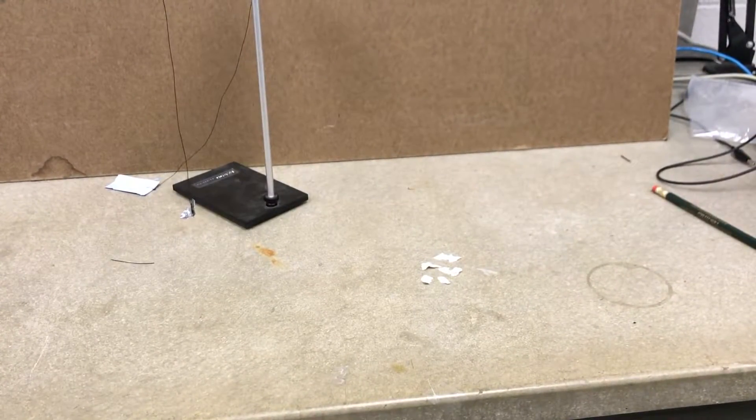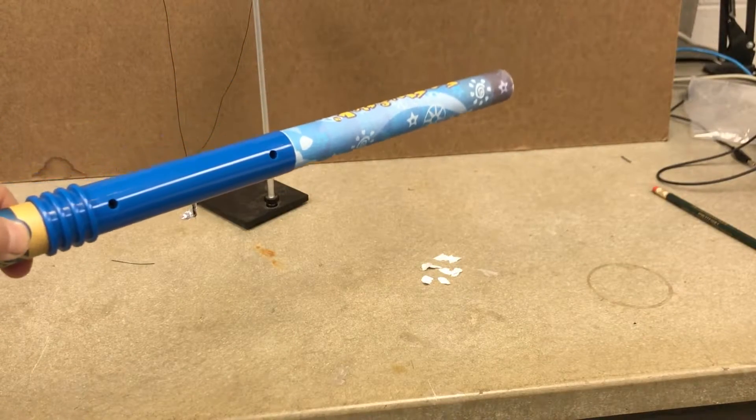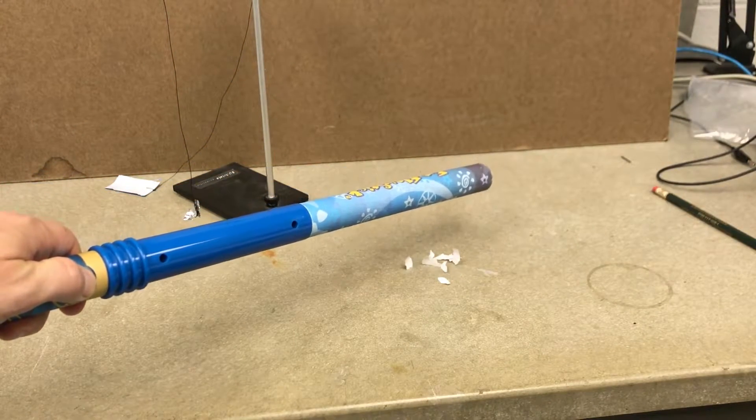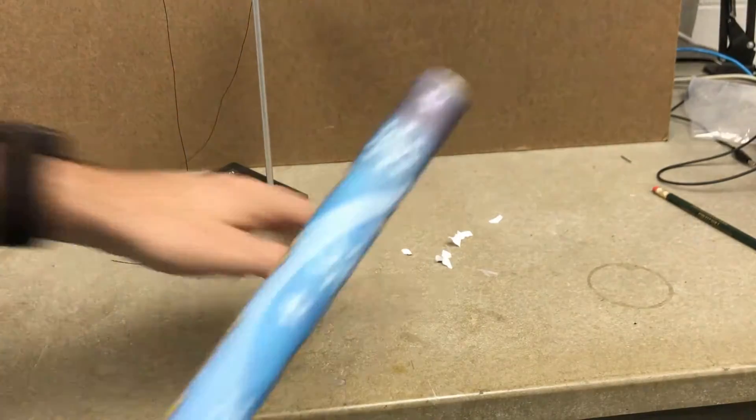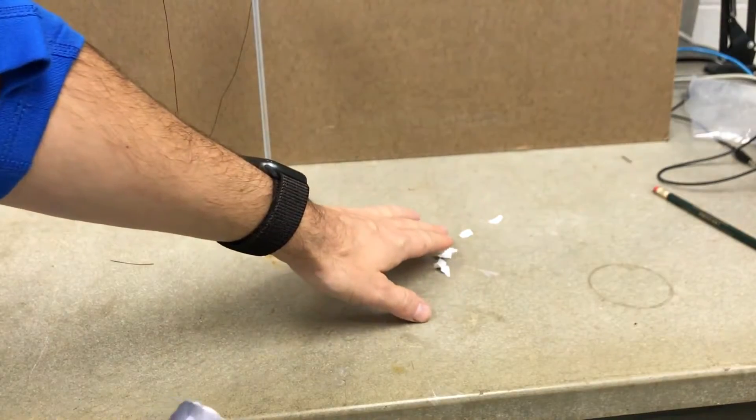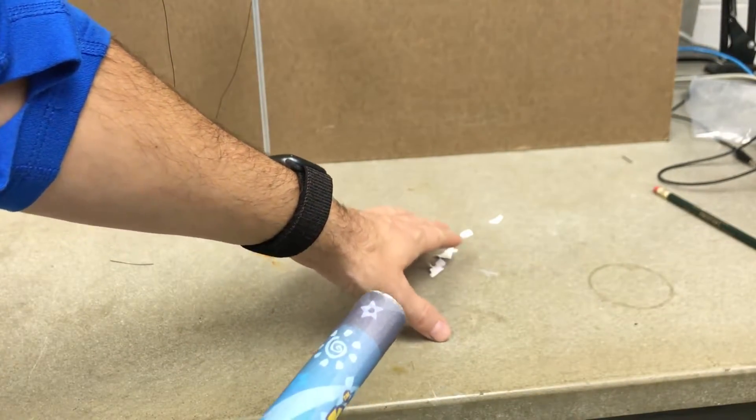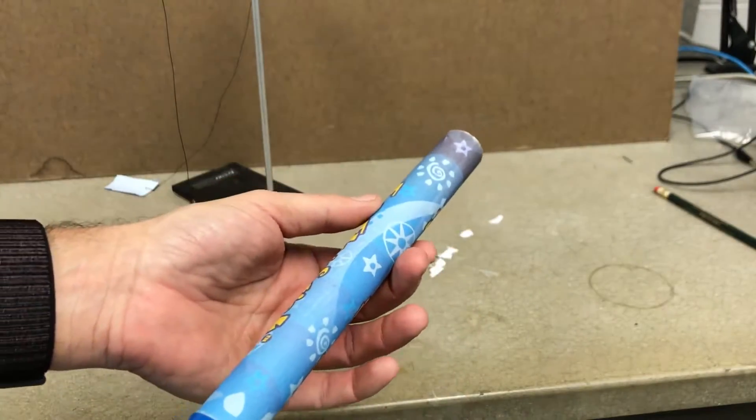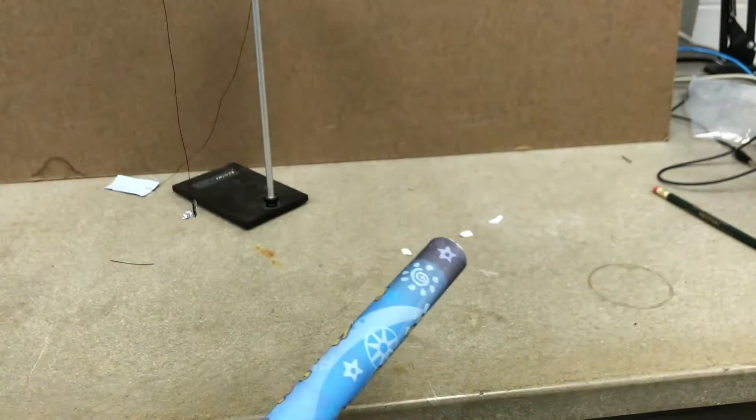Now watch what happens when I bring the Fun Fly rod near the paper. So their neutral paper, the electric charge on here polarizes this to make it attract. Once it touches, then the paper gets some same charge as the rod and repels. And so that's why they come up and back down.